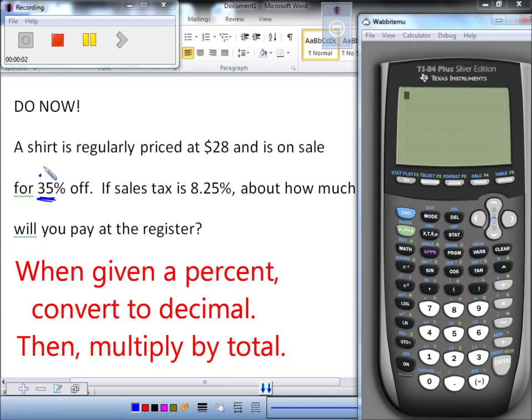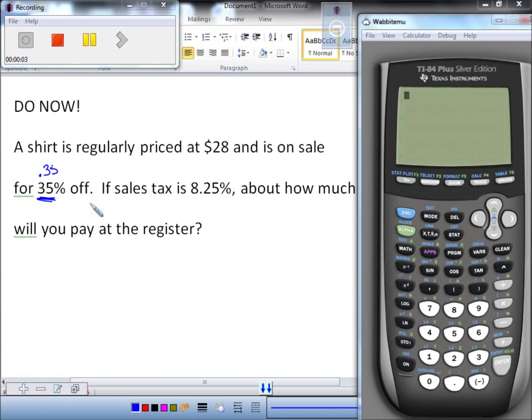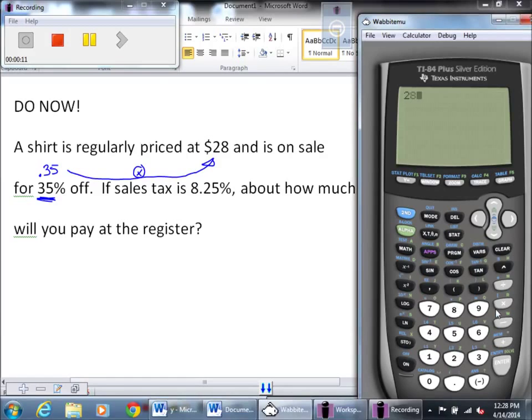Turn 35% into 0.35 and what are we going to do with that? Multiply it, right? Multiply it times the total. We're going to multiply that times the total. Let's take our calculator. 28 times 0.35.